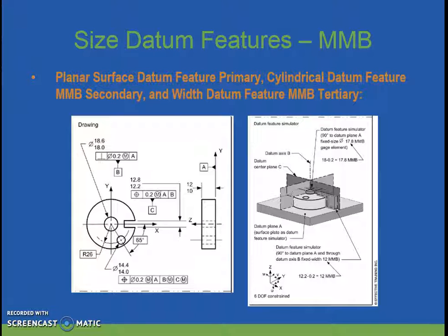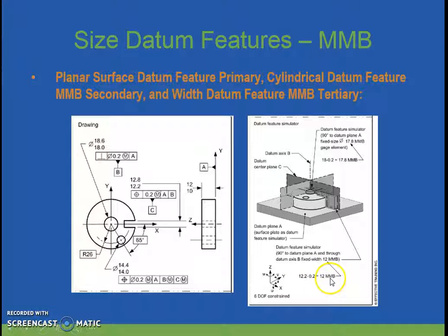Taking it one step further, we add a slot in the part as the tertiary datum reference. Just as before, we have the flat plane in contact with the part and a fixed datum feature simulator for the center hole — a fixed plug or pin — because it is called out at MMB. The slot is likewise called out at MMB, so there is a fixed simulator. The width is called out at 12.2 to 12.8, so maximum material condition is 12.2, minus the tolerance of 0.2, giving us 12.0 for the size of our maximum material boundary datum feature simulator.